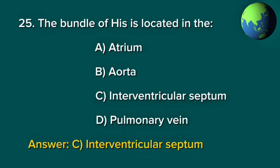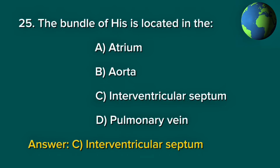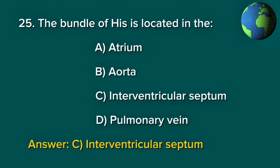Question 25. The bundle of His is located in the: A. Atrium. B. Aorta. C. Interventricular septum. D. Pulmonary vein. Answer: C. Interventricular septum.